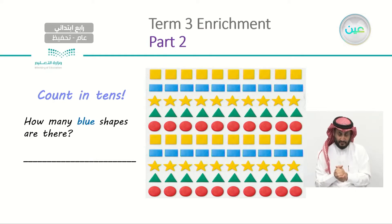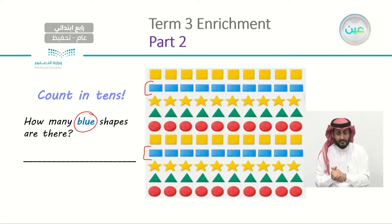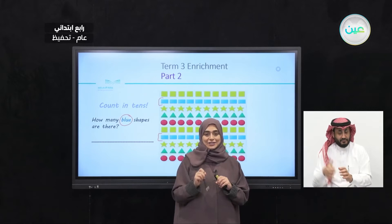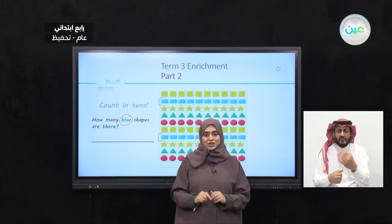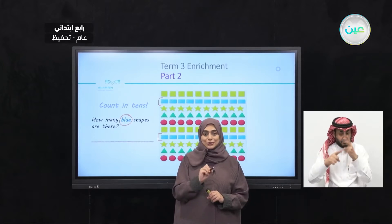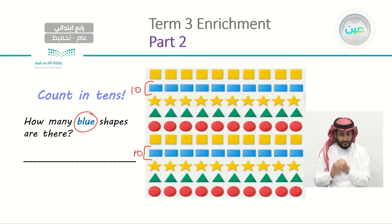Now let's count in tens in blue. What shapes do we have in blue? This row over here and this row over here. Each row is how many? Ten. So how many rows do we have of blue shapes? Two — which means we have twenty. So here we have ten and here we have ten, which means we have twenty blue shapes.